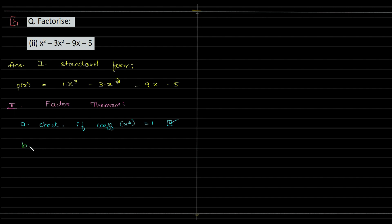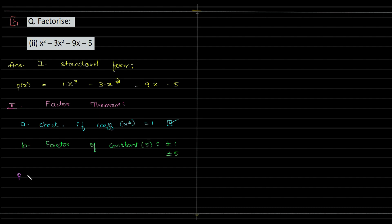The next step is writing the factors of the constant. In this case the constant is minus 5, so the factors are plus or minus 1 and plus or minus 5. These are your set of factors.